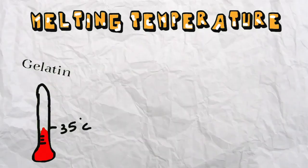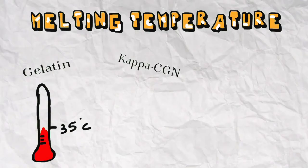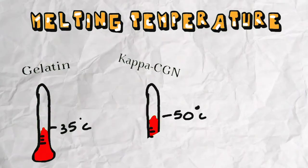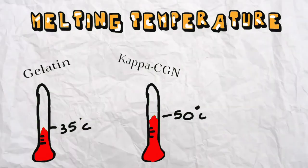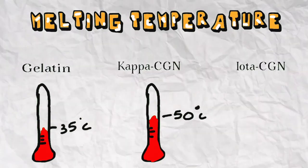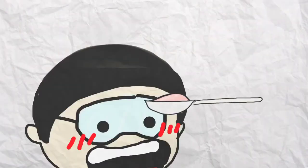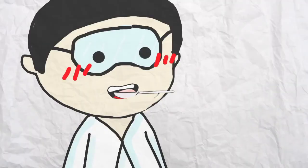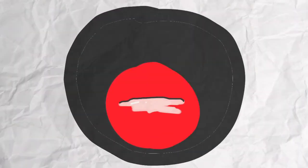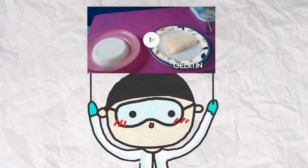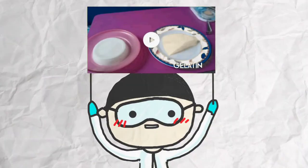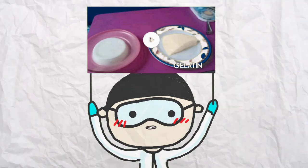The result of this is a brittle and hard texture. Now let's talk about the melting temperature. Gelatin melts at 35 degrees Celsius, while kappa carrageenan melts at 50 degrees Celsius, and iota carrageenan is 10 degrees higher, at 60 degrees Celsius. Thus, unlike carrageenan, gelatin has melt-in-mouth properties.